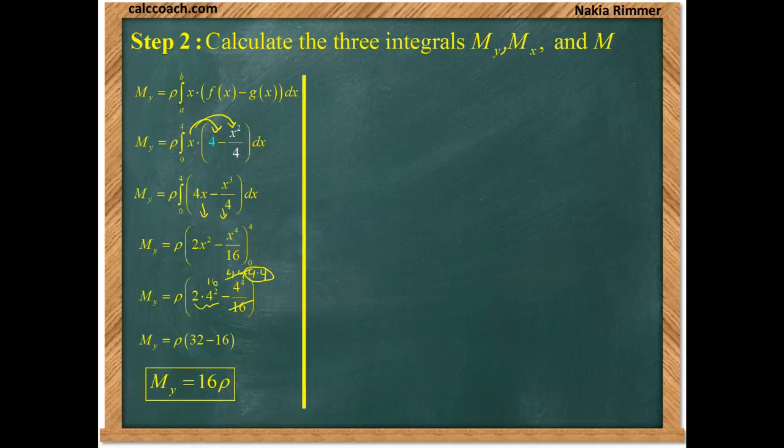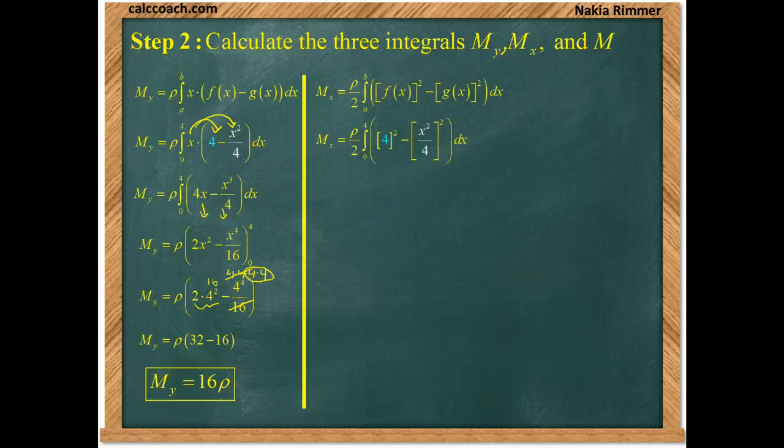Great. Now, let's go get the moment about the x-axis. Get the formula from the cheat sheet. Integrate from 0 to 4. And we're going to have f of x replaced by 4. g of x replaced by x squared over 4.